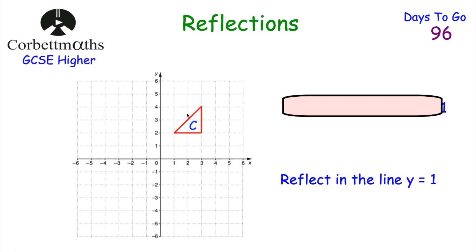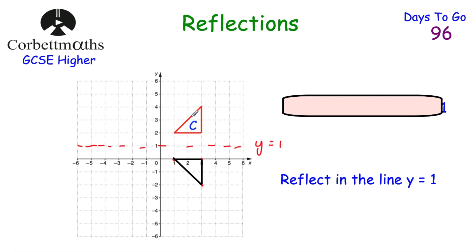This time we've been asked to reflect triangle C in the line y equals one. Have a pause and think about how you'd do it. The mirror line y = 1 is a horizontal line through all points with a height of one. Focusing on the three corners: one point is one above the mirror line so it moves one down; another is one below so it goes one up; and the top point is three above so it moves three down. Join the three new points and we've reflected C in the line y equals one.